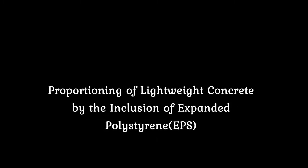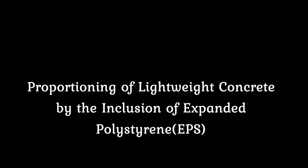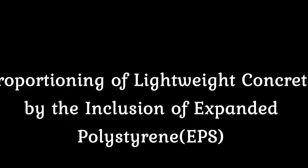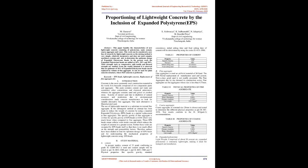Proportioning of Lightweight Concrete by the Inclusion of Expanded Polystyrene. Abstract: This paper handles the characteristics of new lightweight concrete consisting of polystyrene, sand, cement, coarse aggregate, and water. This work can be considered a new line of research for lightweight concrete as the mixing method is very simple, relatively inexpensive, and does not need complex machinery systems, and also to determine the optimum dosage of expanded polystyrene beads.